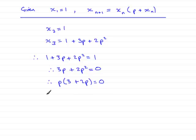So therefore each of the factors would equal 0. That would lead to p equaling 0, or 3 plus 2p equaling 0.